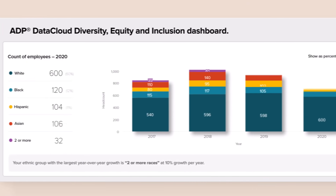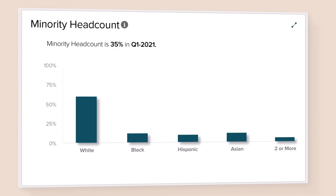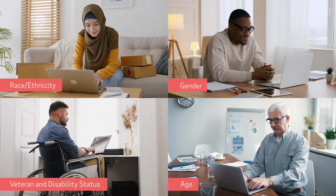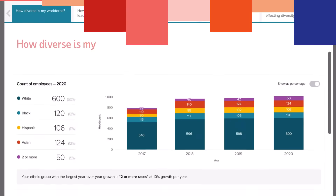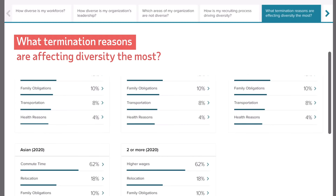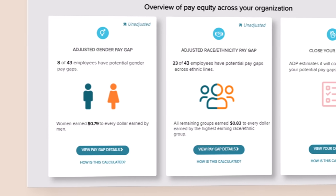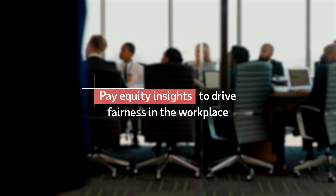The ADP Data Cloud Diversity, Equity, and Inclusion Dashboard provides an easy-to-use, convenient tool to do just that. The dashboard equips you with a guided experience to help answer common questions for management like: how diverse is my workforce and leadership team? Which areas of my organization are not diverse? What termination reasons are affecting diversity the most? ADP's Pay Equity Storyboard can also help you identify and address employee pay gaps, which can help improve retention.